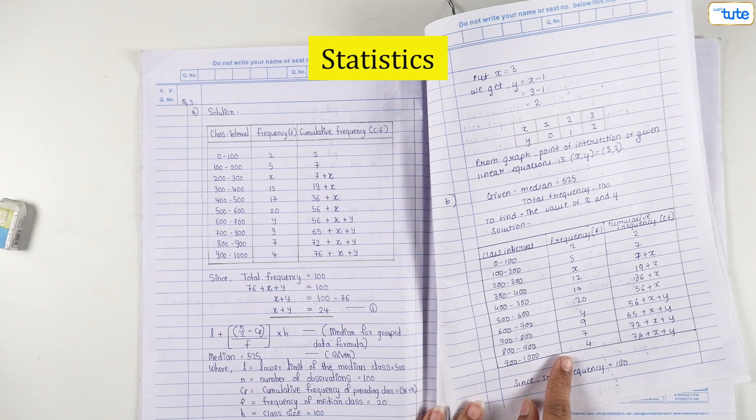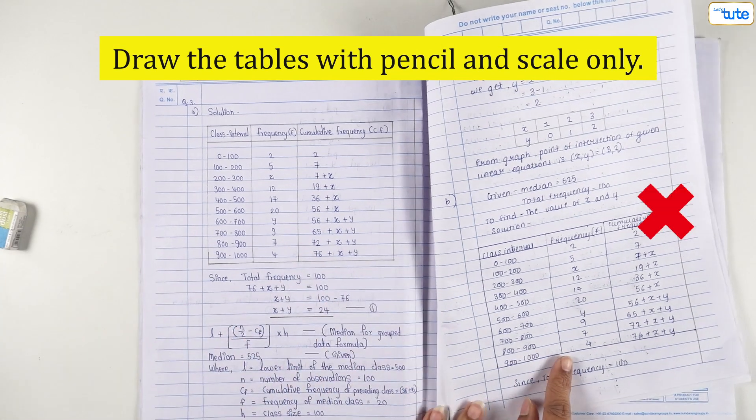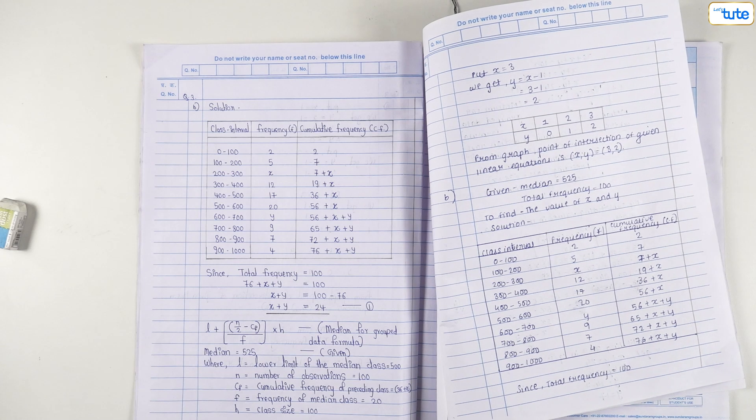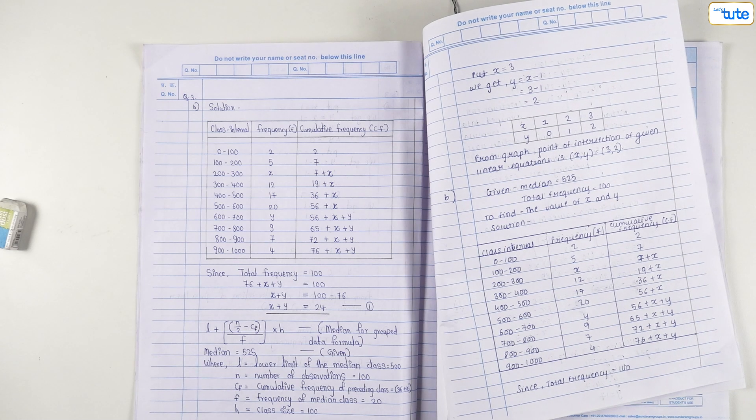For questions of statistics, draw the table with pencil and scale only. Carry out the calculations on the last page in the rough work part. Copy the correct values without interchanging any digits.